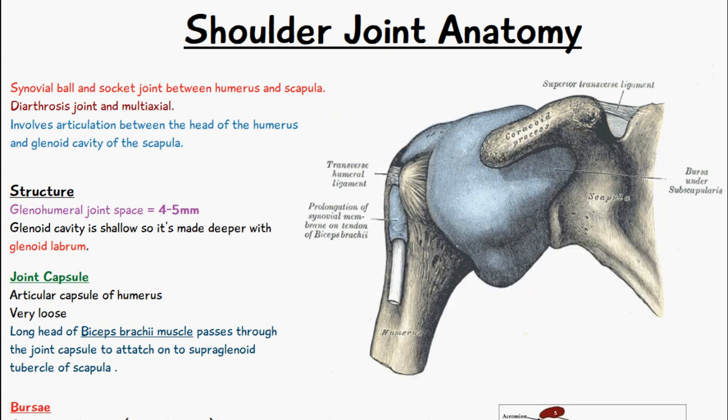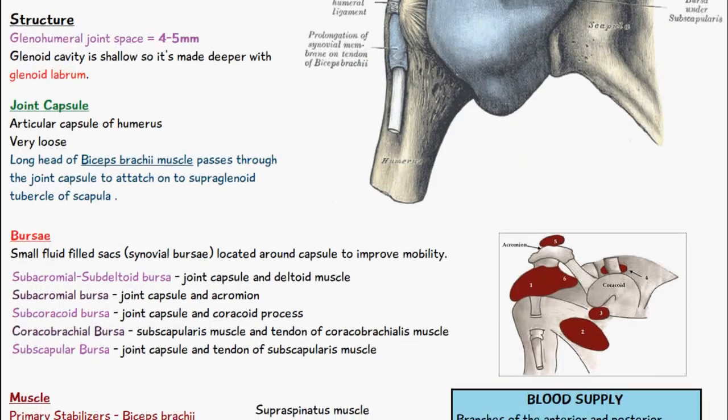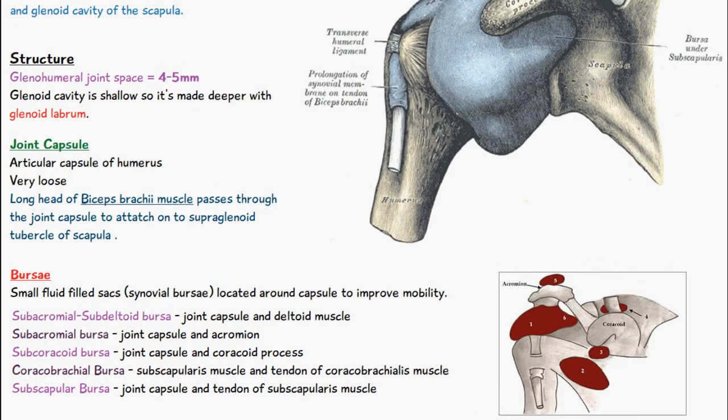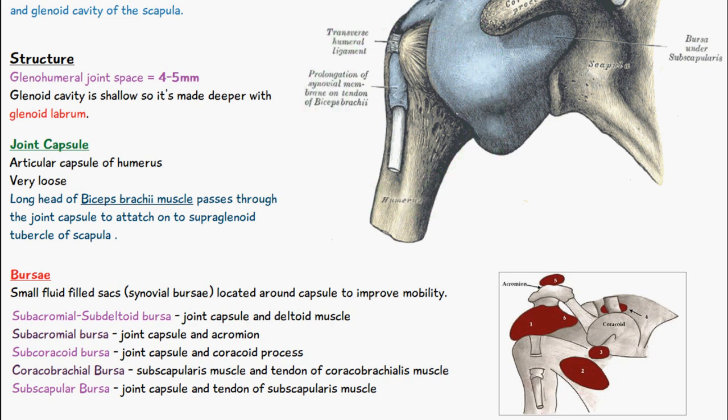The components of the shoulder joint consist of the joint capsule and bursae. The joint capsule is very loose, and the long head of the biceps brachii muscle passes through it. The bursae are small fluid-filled sacs located around the capsule, and their purpose is to improve mobility and prevent friction.